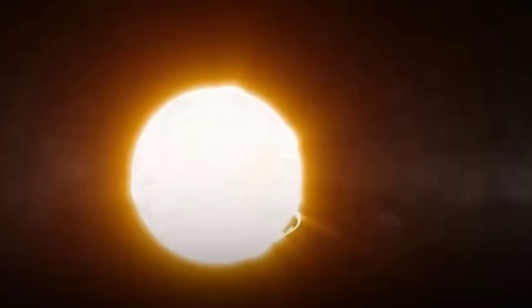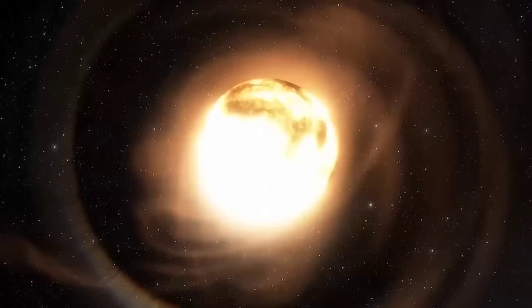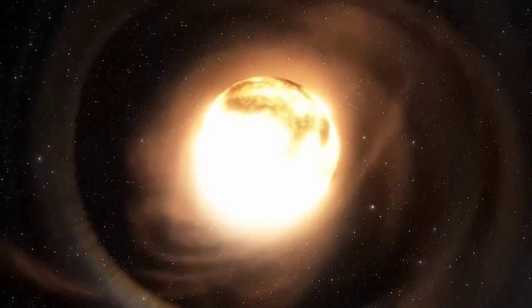You might be wondering, why did Betelgeuse start dimming all of a sudden? Well, the strange dimming was apparently caused by a cloud of hot gas released by the star that temporarily blocked some of the star's light.